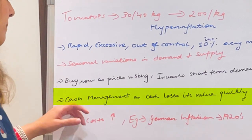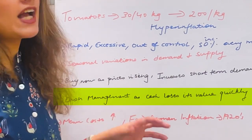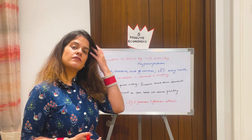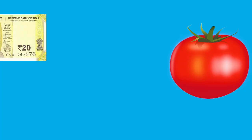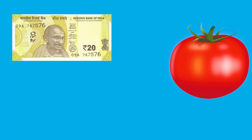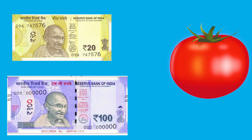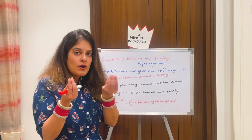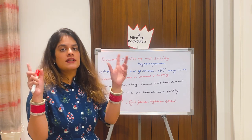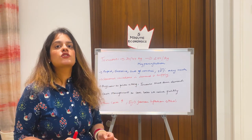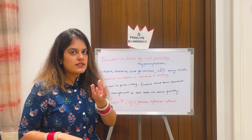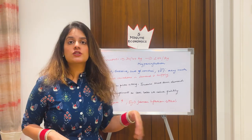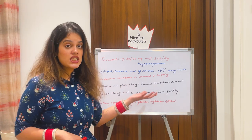There is a mismanagement that has happened during this time. Cash is losing its value very quickly during this hyperinflation. When you used to take 20–30 rupees to buy tomatoes, now even taking 100 rupees is not enough to buy the amount your family requires. That 50-rupee note has basically lost its value — you are getting very few tomatoes for it now. So you have to manage cash better during such a case.